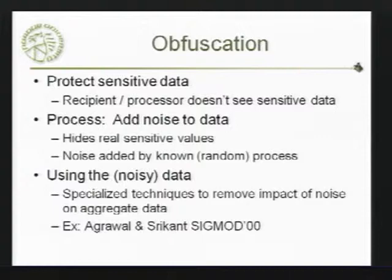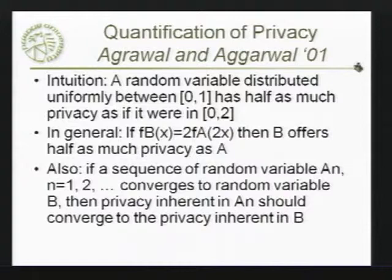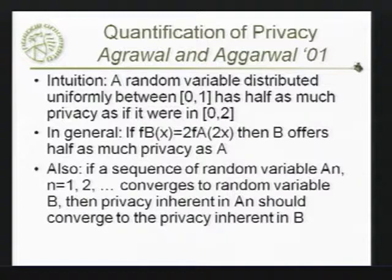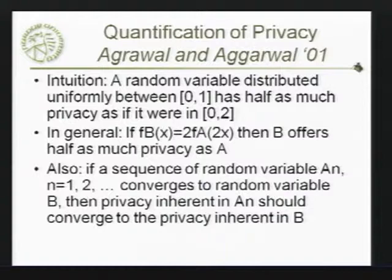So how do we measure privacy in something like this? The following year, people looked at Srikant and Agarwal's paper and said their notion of privacy and how much privacy they're getting doesn't make a lot of sense. They said we want something that is much more intuitively reasonable. Their intuition was: if I add a number randomly selected between 0 and 1 versus adding a number between 0 and 2, the first is going to give me half as much privacy — so I want a measure that captures that notion. And if I have a sequence of random variables converging to something, the privacy measure should also converge to the same thing.